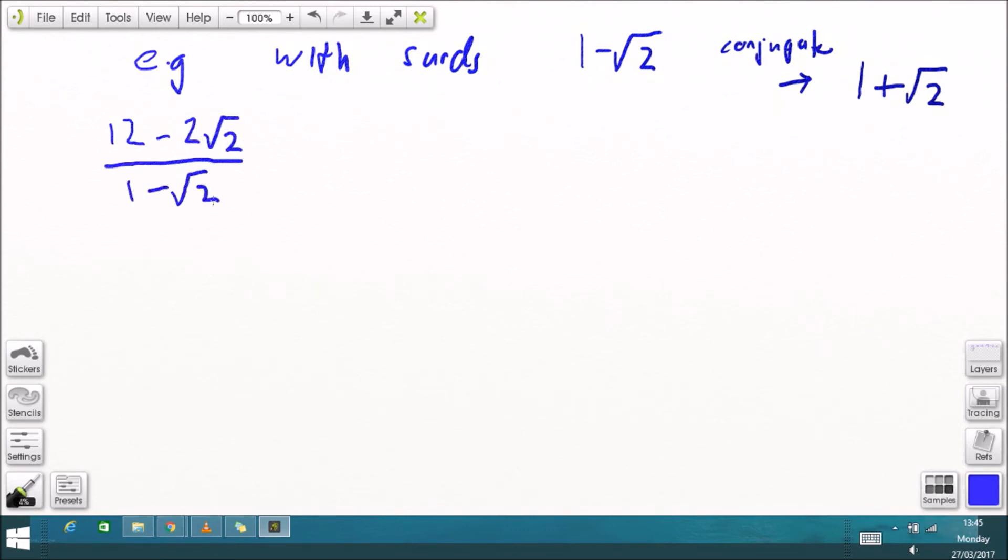so here's an example using surds and this is probably the main point of this video if I've got a surd one minus root two, the conjugate is one plus root two